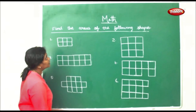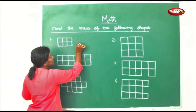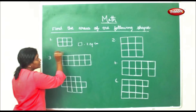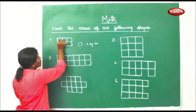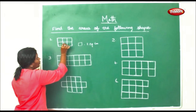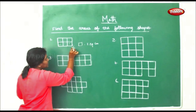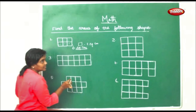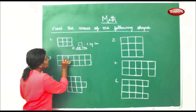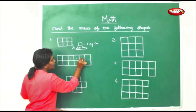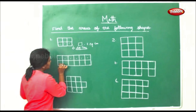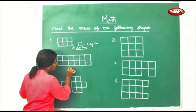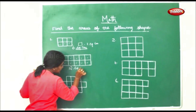Now let us find out the areas for the following shapes. One box is one square centimeter. We will count how many boxes and write how many square centimeters. One, two, three, four, five, six — so this will be 6 square centimeters. It is necessary to write square centimeters. Again here: one, two, three, four, five, six, seven, eight, nine, ten, eleven, twelve — so this will be 12 square centimeters.